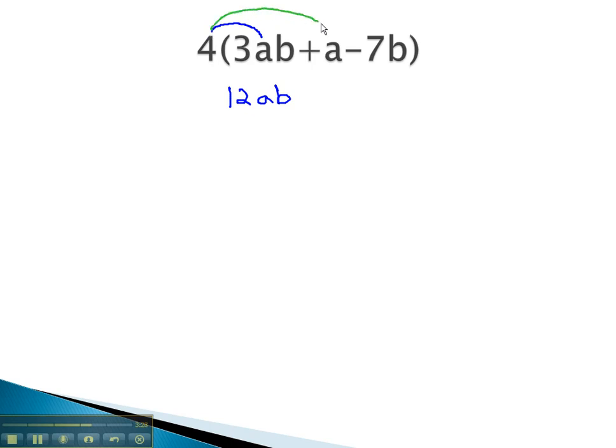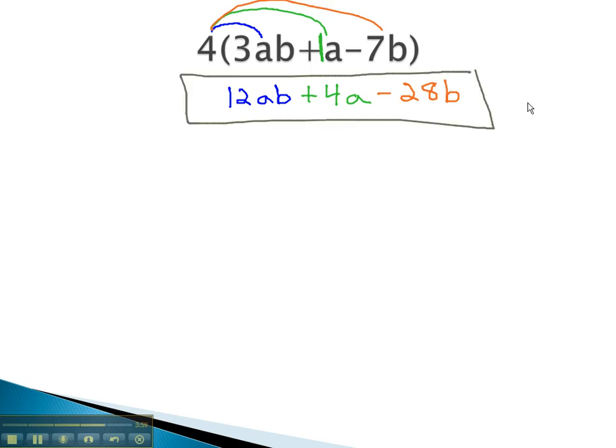And then we need to multiply the 4 times the a. It will be important to remember that if there is no number written in front of a variable, we will assume the number 1 is in front, and a represents one single a. So, 4 times positive 1 is positive 4 of these a's, and finally 4 times negative 7b is negative 28b. And this will become our final solution.